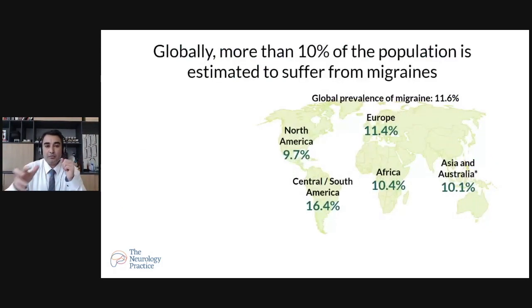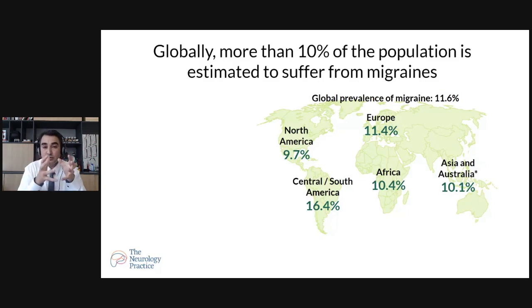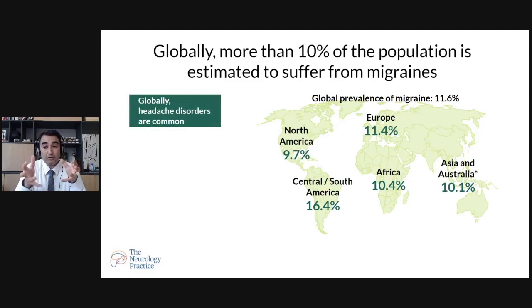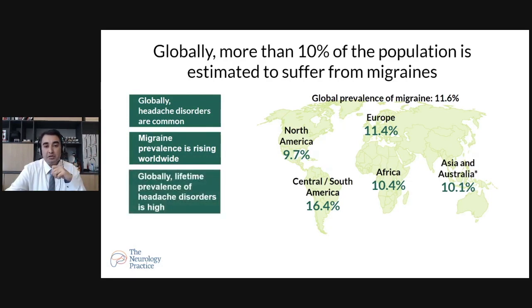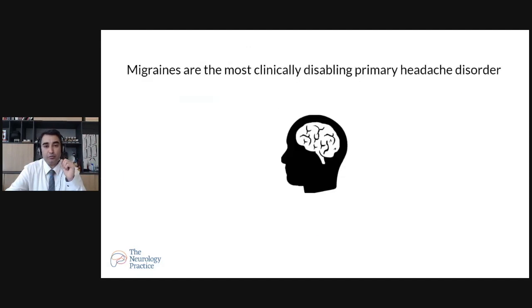Globally, more than 10% of the population is estimated to suffer from migraine — this is a huge disease burden. North America has around 10%, Europe 11.4%, Central and South America 16.4%, and Africa, Asia, and Australia around 10%. The lifetime prevalence of headache disorders is very high globally, and migraine is the main primary headache cause worldwide.